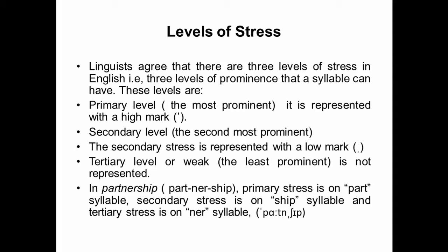These were the four factors for making a syllable prominent. Now, levels of stress. Linguists agree that there are three levels of stress in English — three levels of prominence a syllable can have. Number one is the primary level: the most prominent syllable, represented with a high diacritic mark. Secondary level: the second most prominent, represented with a low mark. Tertiary or weak level: the least prominent, not represented with any mark.